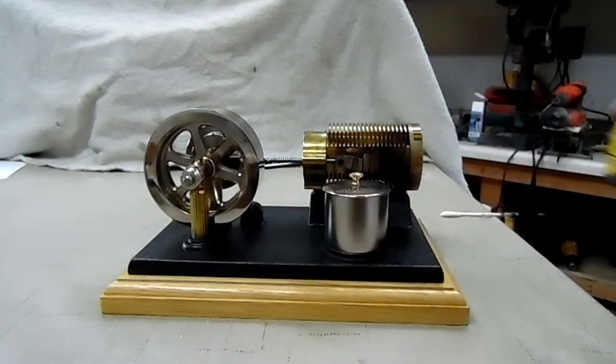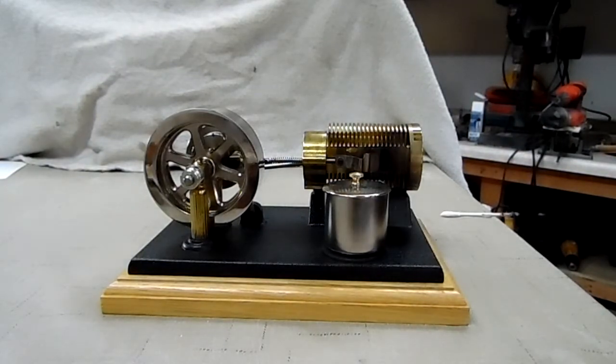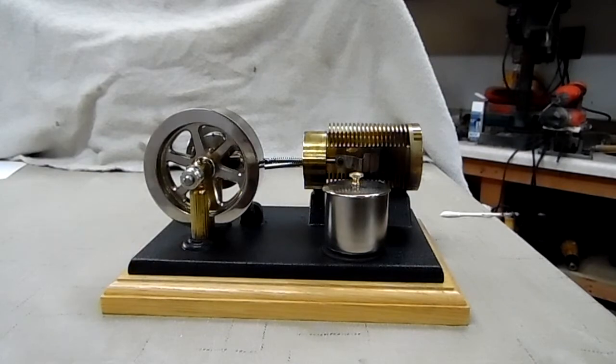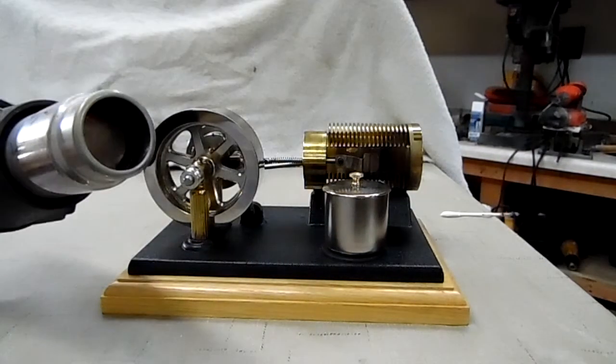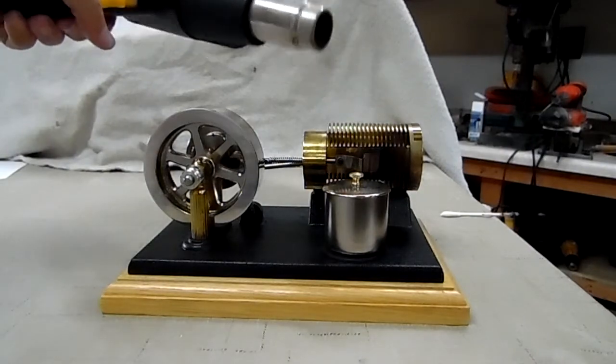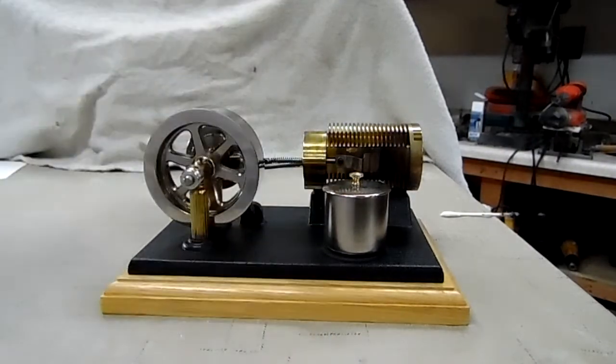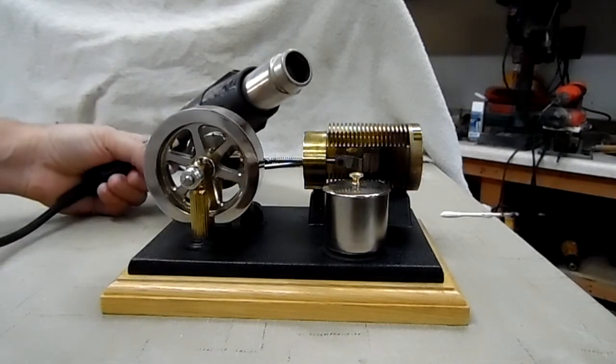Okay and one thing I do, they just don't talk about it, but I have a paint stripper. A hairdryer would work but this is a lot more powerful. This is a paint stripper and I heat the cylinder up for about 30 seconds, is all it takes with this paint stripper to get this big chunk of brass warm enough to run.